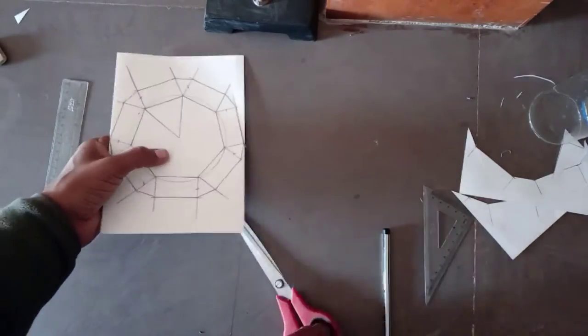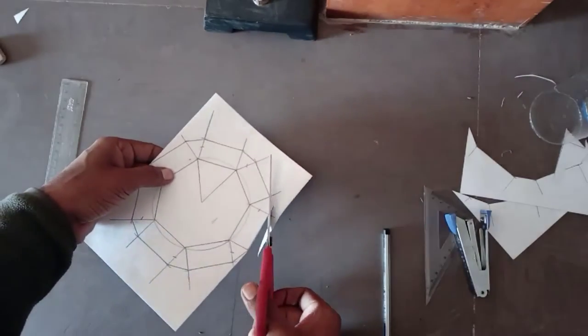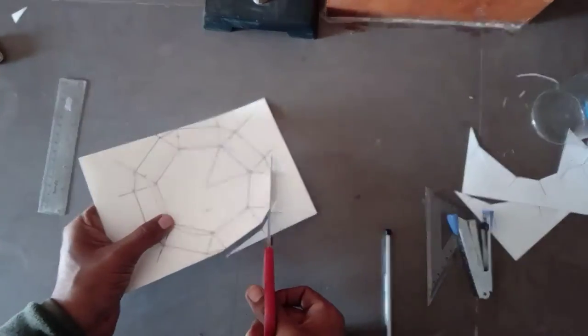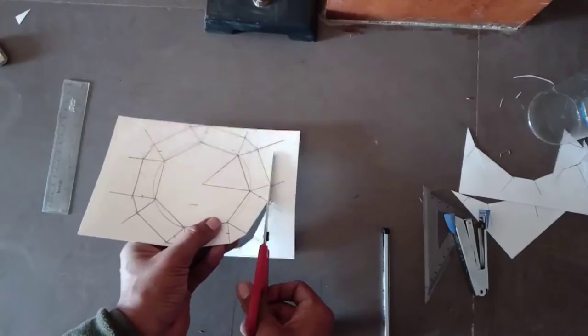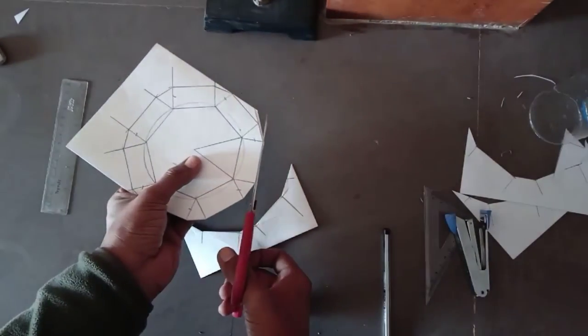We have seven triangles in this model and we have marked one side of every triangle.